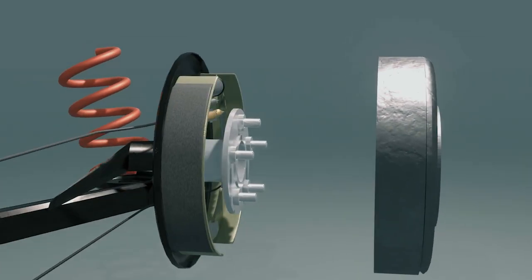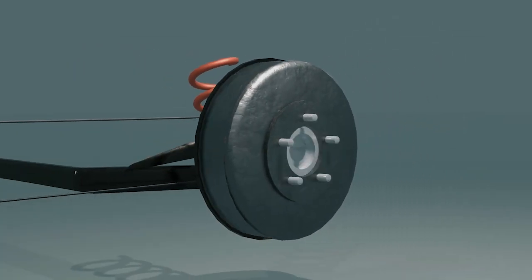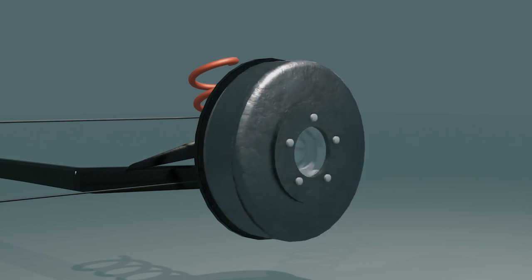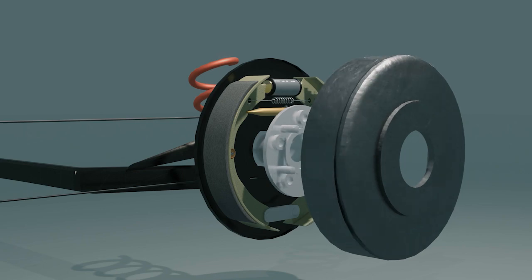In other words, this drum will be connected to the wheel and will rotate according to the rotation of the wheel. So, the braking on a drum brake occurs when the brake shoe comes into contact with the drum. Then, how does the contact mechanism work?